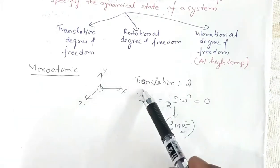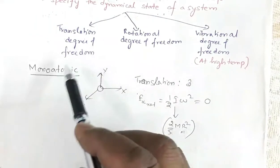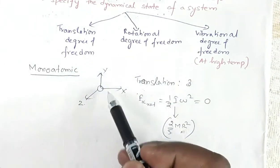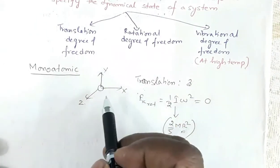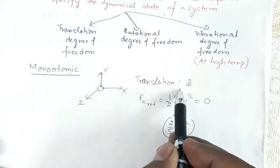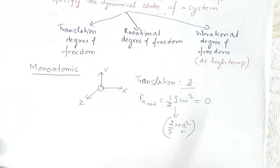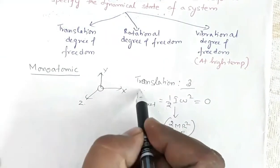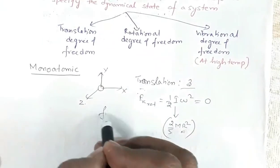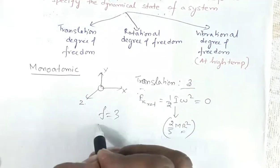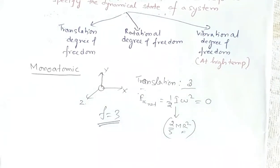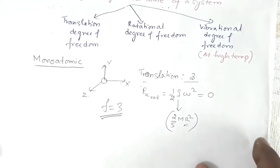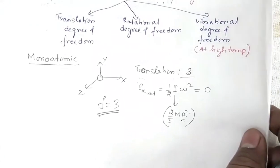For a single atom, vibration in a particular direction corresponds to translatory motion in that direction, which we have already counted. So a monoatomic gas molecule can have only three degrees of freedom due to translation — f = 3 for a monoatomic gas molecule.